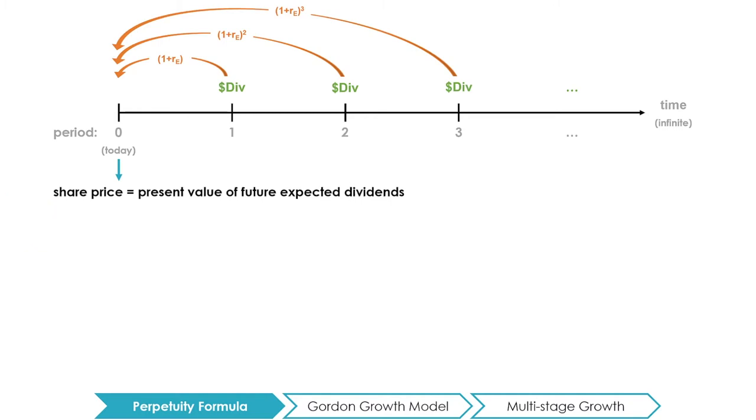As long as the shareholder holds on to the preferred share forever, he can continue to expect these periodic dividends. This stream of cash flows is a perpetuity, a stream of fixed payments delivered at fixed intervals forever.